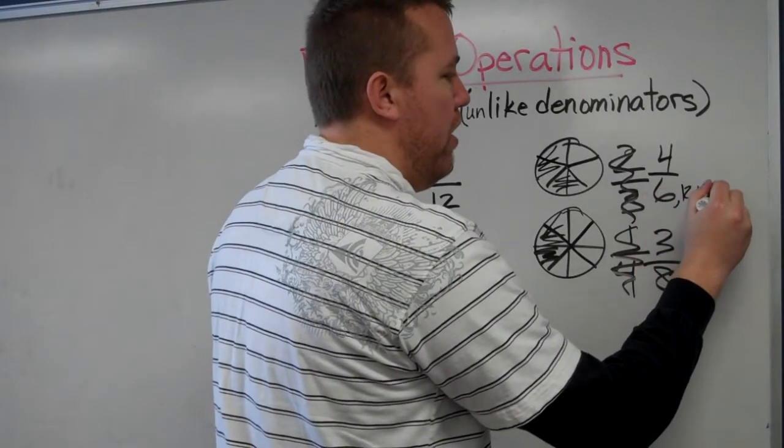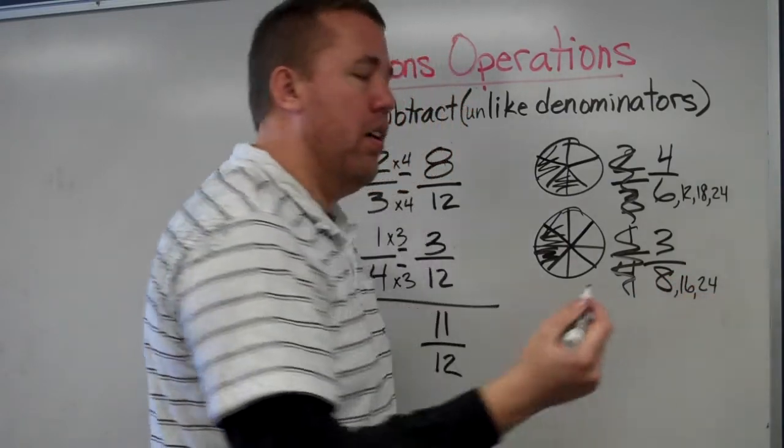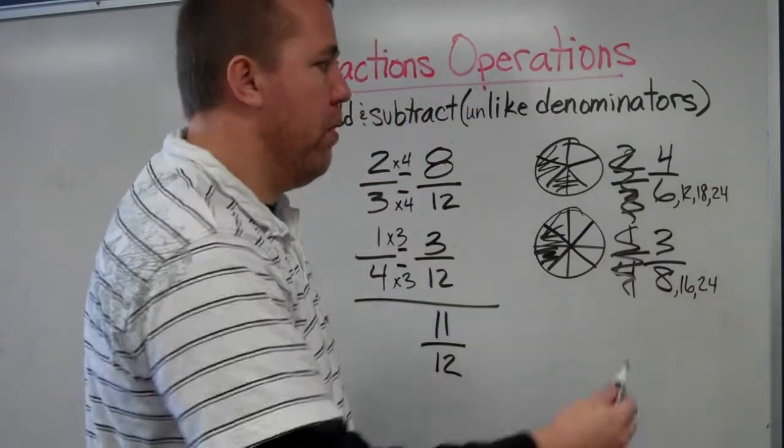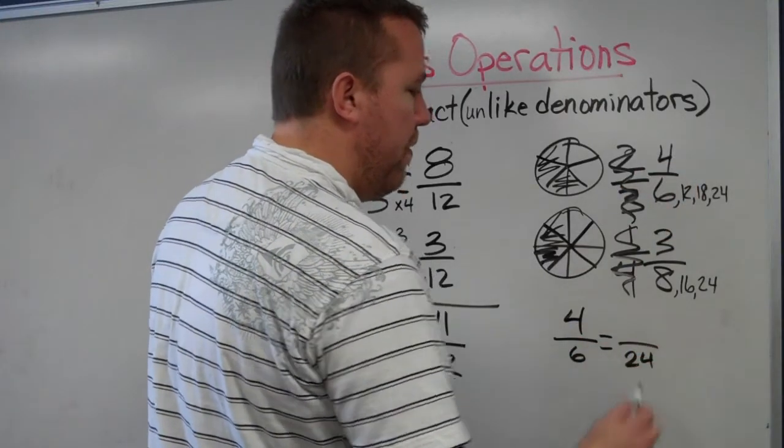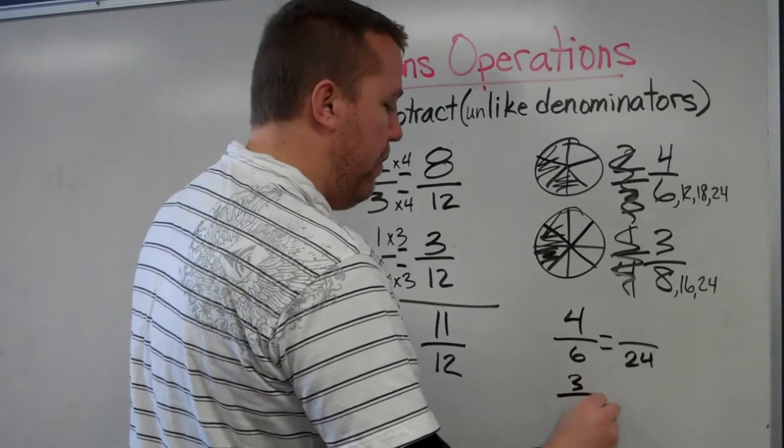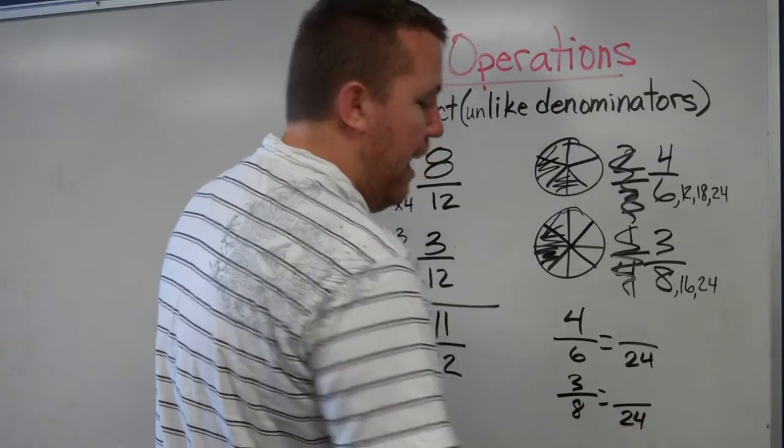I list the multiples: six, twelve, eighteen, twenty-four. Eight, sixteen, twenty-four. They both go into twenty-four. So I'm going to make four-sixths equal something twenty-fourths, and three-eighths equal something twenty-fourths. Then I can subtract.